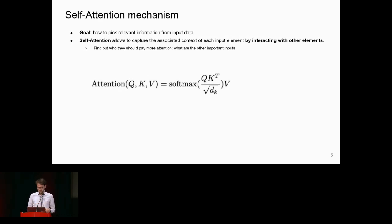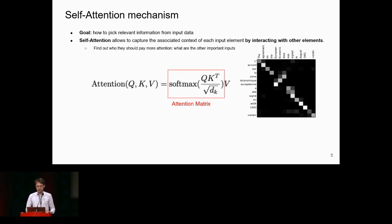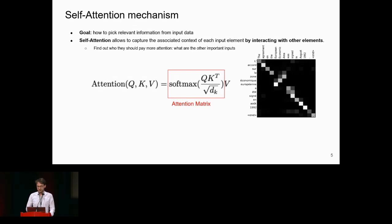In practice, attention is computed as a similarity between inputs, yielding an attention matrix. High similarity indicates that inputs are important to each other. One advantage of this approach is that you can visualize these interactions. Here is an example of an attention matrix for translation between French and English — you can clearly see the noun-adjective inversion between the two languages.